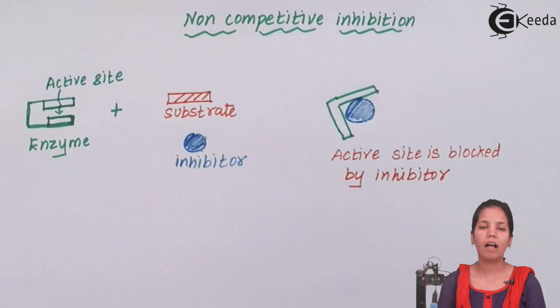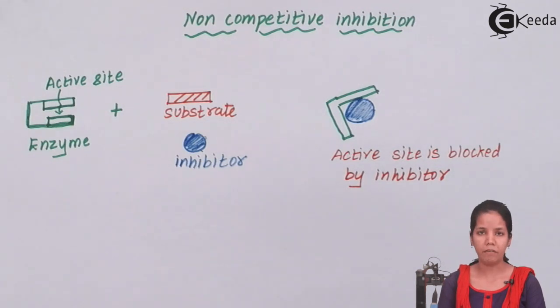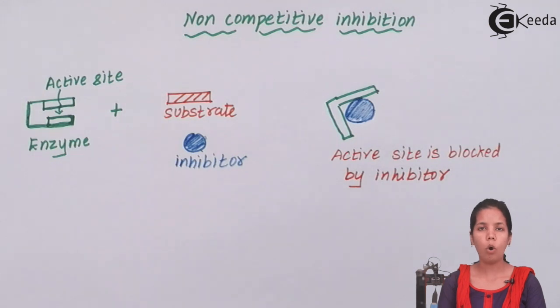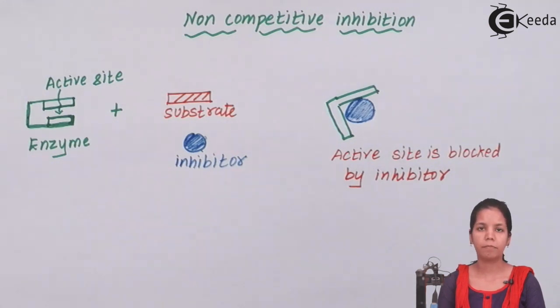In this part, we have studied about two types of inhibitors — competitive and non-competitive. I hope you are all clear about the two types of inhibitors. Thank you.